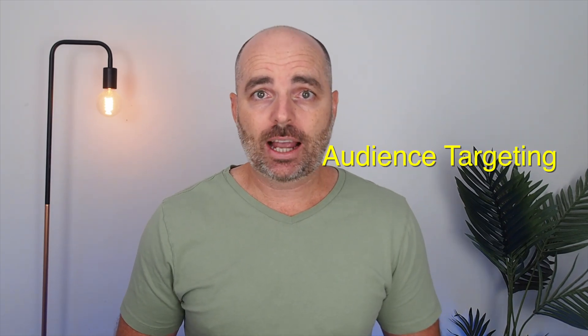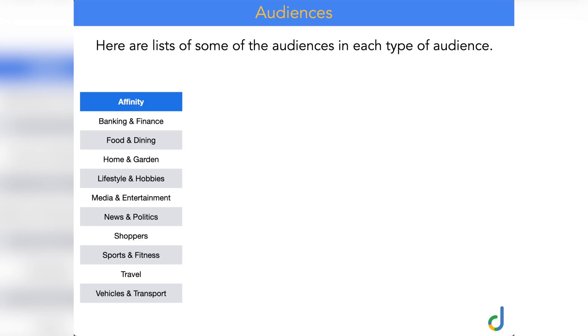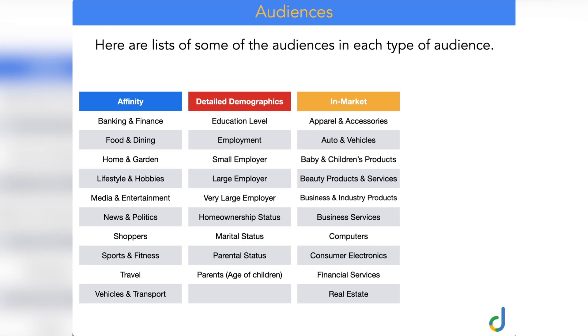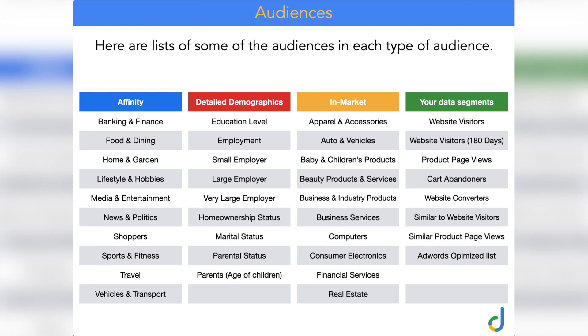Audience targeting lets you add specific targeting or bid optimizations to focus more of your Google Ads budget on people who are part of certain audiences. These audiences cover four main themes: affinity targeting (banking and finance, food and dining, lifestyle and hobbies), detailed demographics (education level, employment, home ownership status), in-market audiences (what people are currently searching for, like apparel, business and industry products), and your own data segments such as remarketing lists or previous website visitors. Google gets this information from your search history and other web profiles it can access.